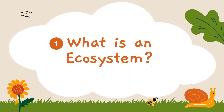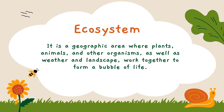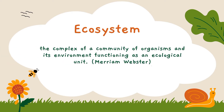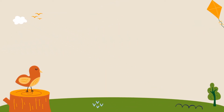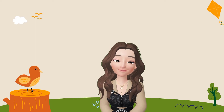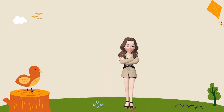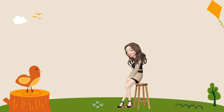Do you have any idea what is an ecosystem? The whole surface of the earth is a series of connected ecosystems. An ecosystem is a geographic area where the living and non-living organisms work together to form a bubble of life. According to Merriam-Webster, an ecosystem is a community of organisms and its environment functioning as an ecological unit.